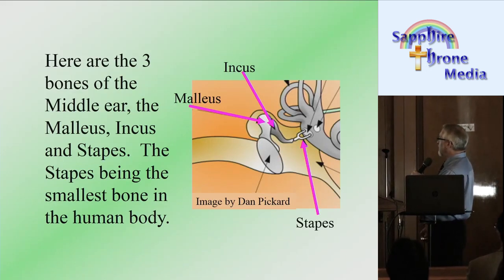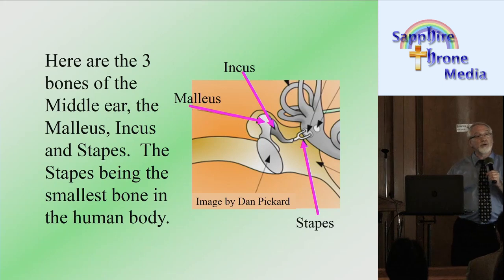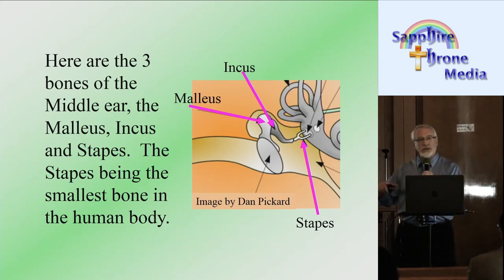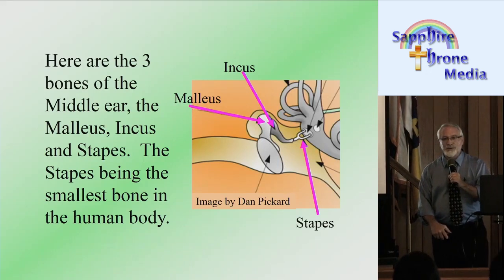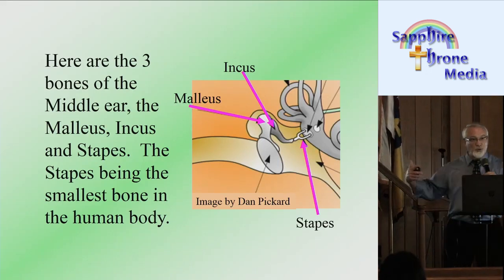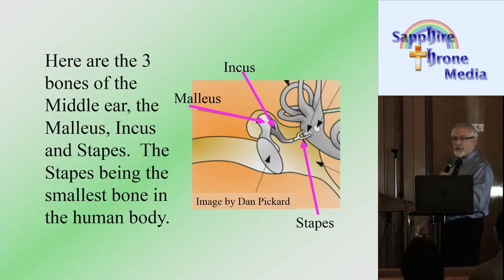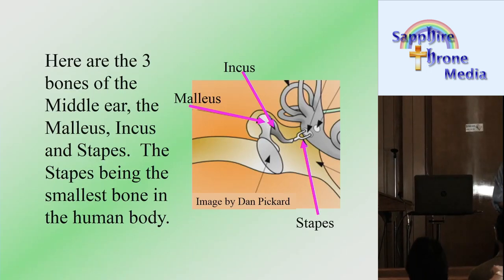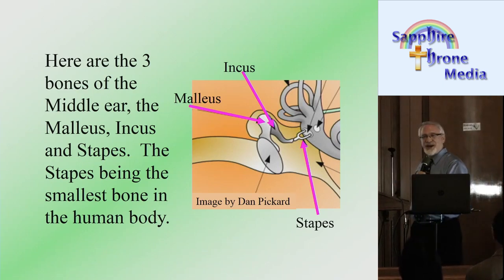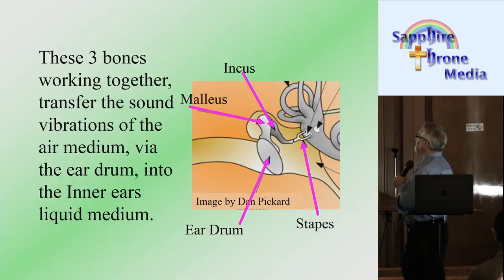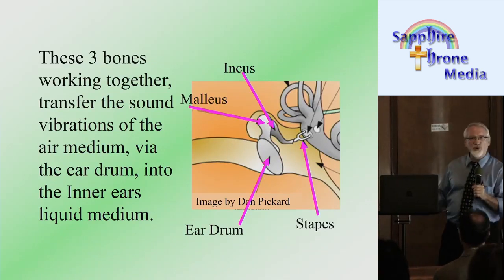These three bones of the middle ear are the same size at your death as they were at your birth — they don't change, they don't grow. If they did, they would poke a hole in your eardrum. So why is it that all of the other bones in your body grow but these don't? Because God created it that way.